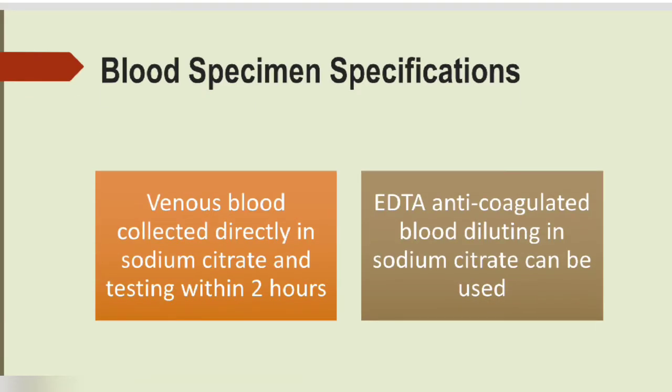Blood specimen specification: use only venous blood collected directly, then add it to trisodium citrate. The test must be done within two hours. EDTA anticoagulated blood can also be used by adding trisodium citrate later, and the test can then be performed within six hours if refrigerated.